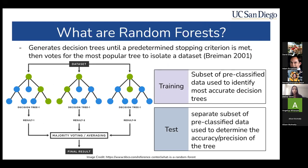Previous research has shown that classification is possible based on the photometric colors and indices of these stars. I want to implement a random forest model to take a look at a classification problem. A random forest model will generate decision trees until a predetermined stopping criterion is met, and then it will vote for the most popular tree to isolate that final data set. We have a training and a test data set — both pre-classified, but the random forest doesn't know which ones are which until we tell it.